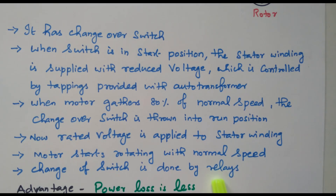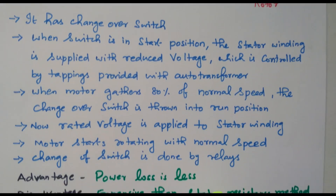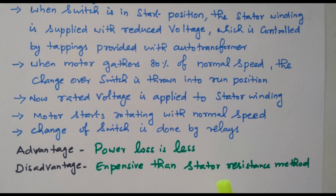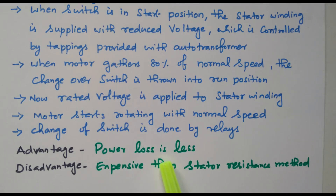In this method, the auto-transformer is used to apply the reduced voltage to the stator so that the current taken by the stator is also reduced. The main advantage of this method is that power loss is less. In the stator-resistance method, power is lost, but here power is not lost. However, a disadvantage is that this method is expensive. The stator-resistance method is very cheap — only one set of resistors is needed — but here we need an auto-transformer, which is more expensive.